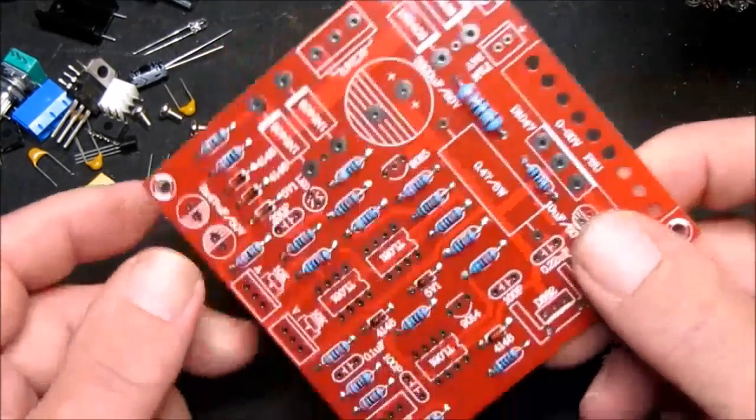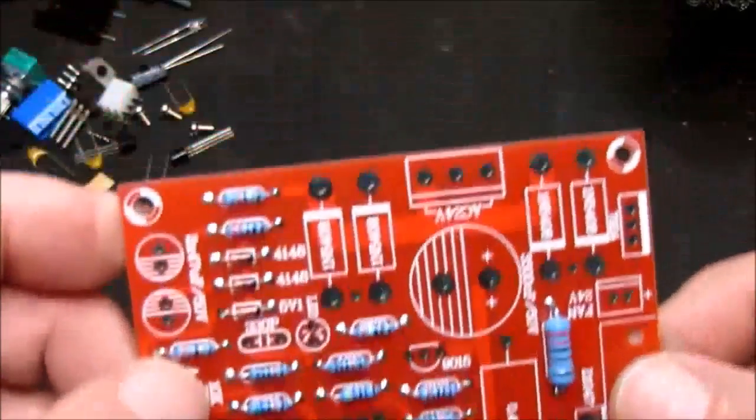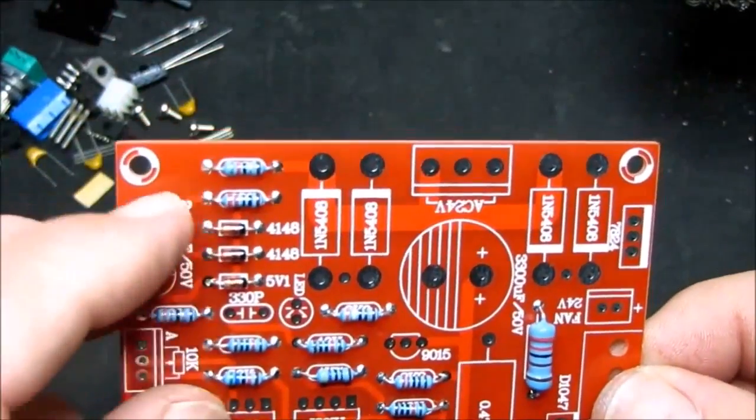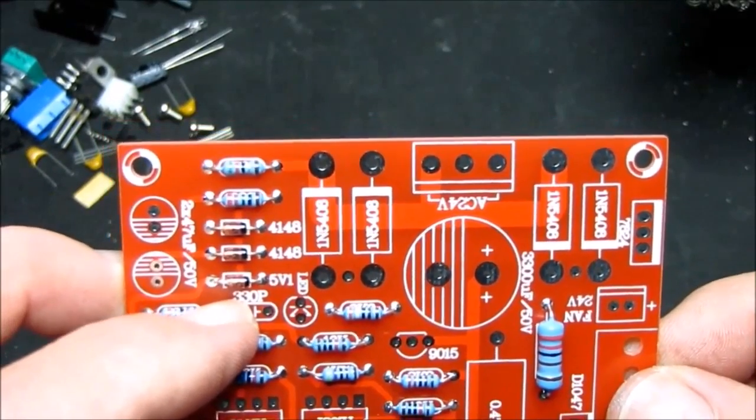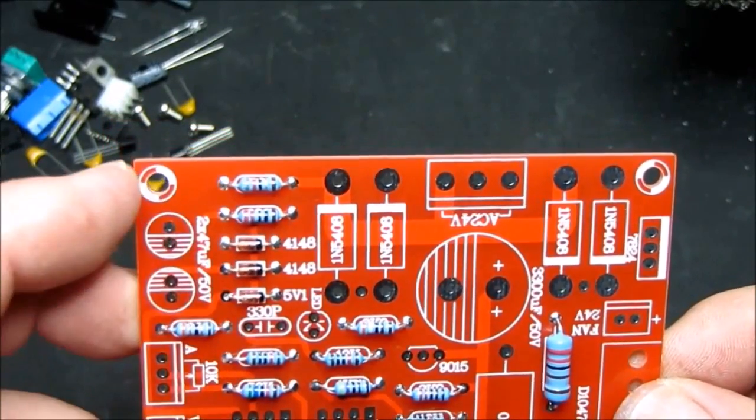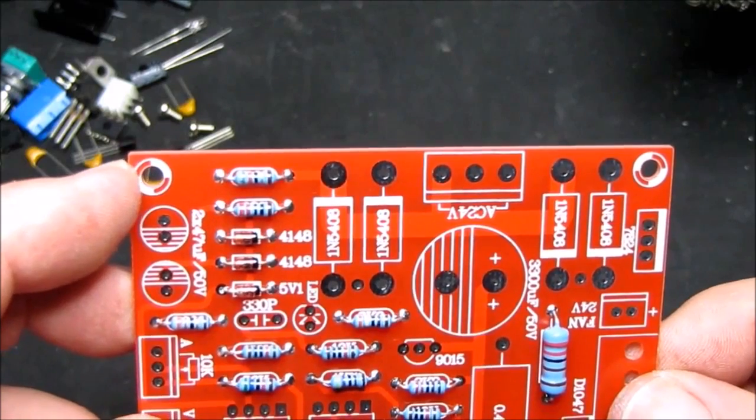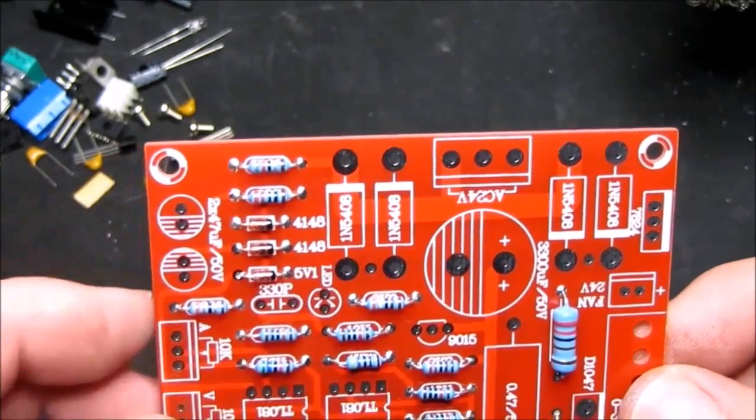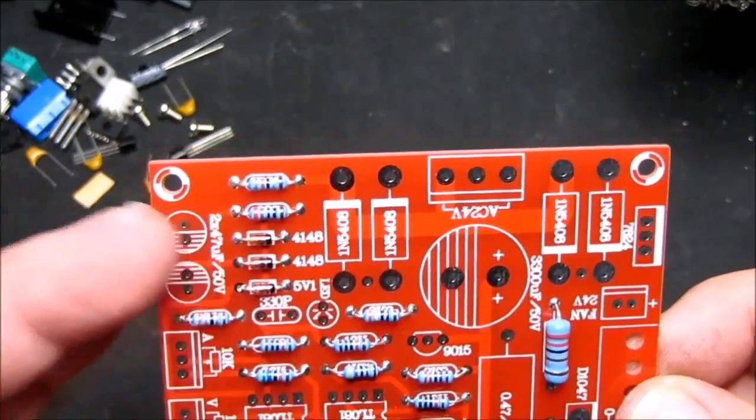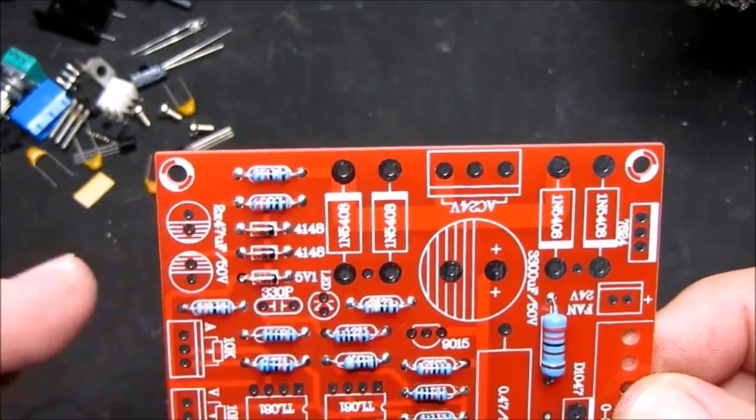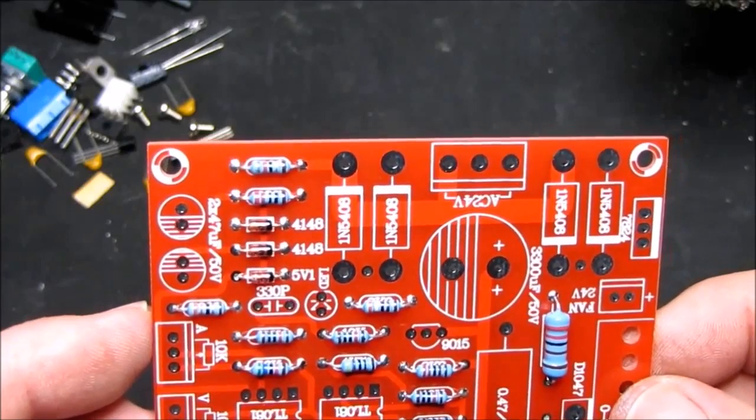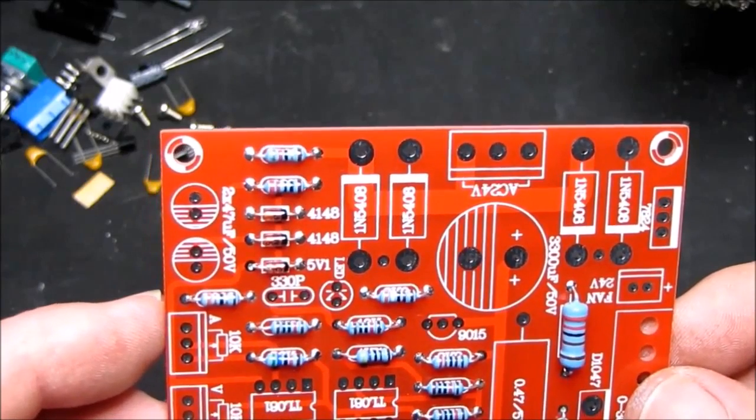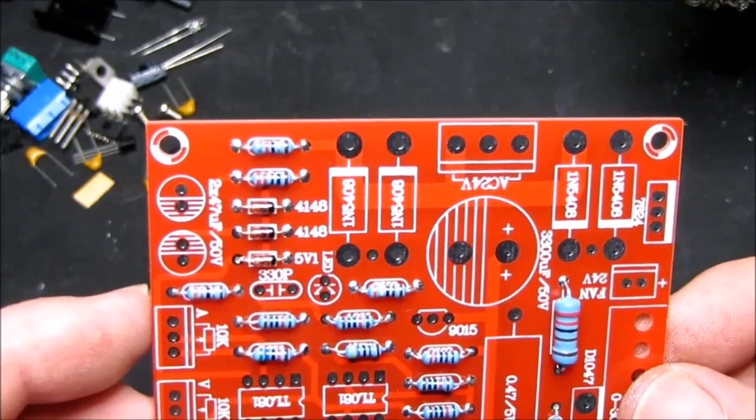Diodes are fairly straightforward. Just a caution there. The 1N4148s and the 5.1V Zener are both physically the same size and very, very similar. Fortunately there are four of the 4148s and only two of the 5V1s. So you can just go by that. Otherwise you need a magnifying glass.